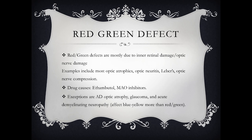Exceptions to the red-green defect rule are autosomal dominant optic atrophy, glaucoma, and acute demyelinating neuropathy. Whenever glaucoma or acute demyelinating neuropathy occurs, it mainly affects blue-yellow color vision more than red-green.